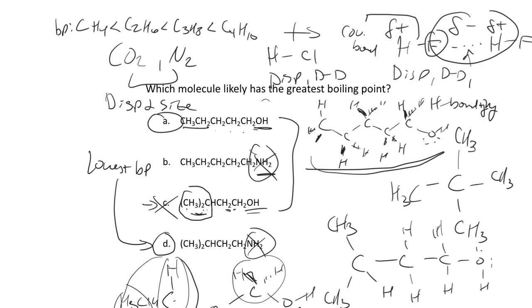One of the recitation activities kind of made a mistake in having the two carbon chains be a different length. But if you make the carbon chain longer in one, it's still higher boiling — you can still determine the right answer. If you make the chain in A longer, that just makes it even higher boiling.